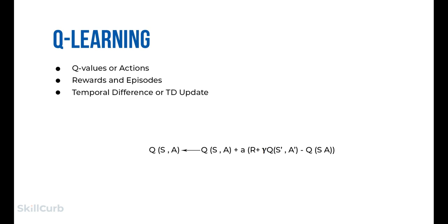An agent starts from the start state and makes transitions from its current state to a next state based on its choice of action and the environment it interacts with. At every step, the agent takes an action, observes a reward from the environment, and transits to another state. If the agent ends up in one of the terminating states, meaning no further transition is possible, this is the completion of an episode.